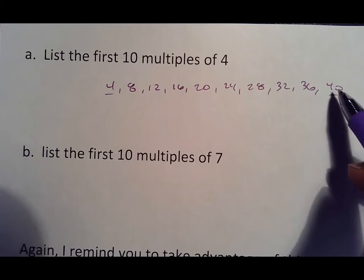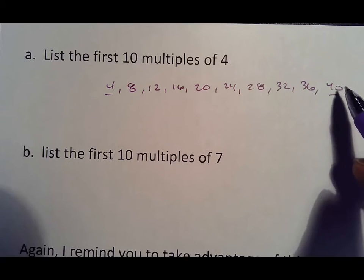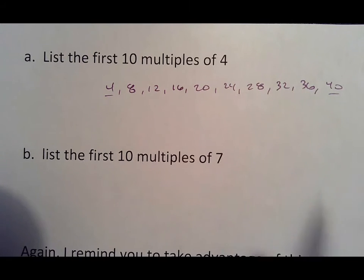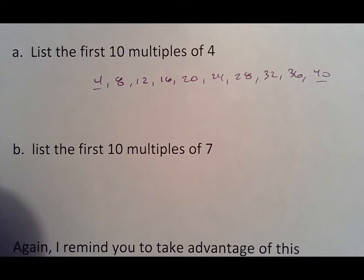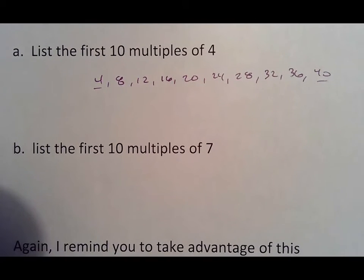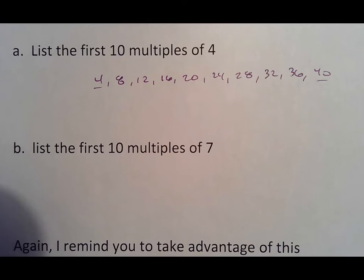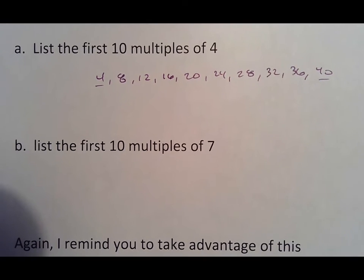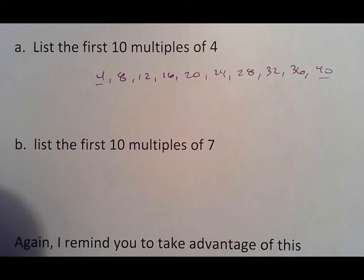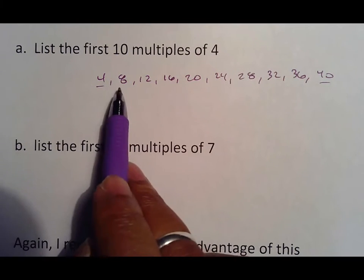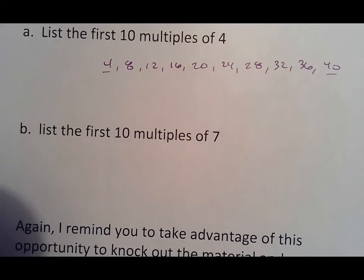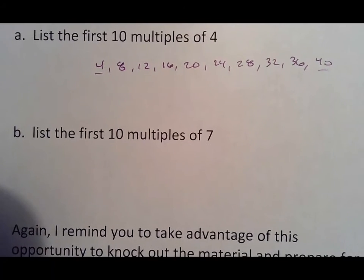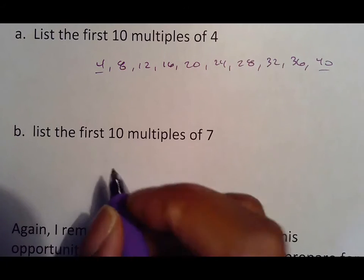If you get to forty-one or forty-three, it means you messed up somewhere in between, so go back and check. If you've made more mistakes than you think you should, go ahead and grab your calculator and type four times one, or keep hitting plus four, plus four, plus four, and write those numbers down.